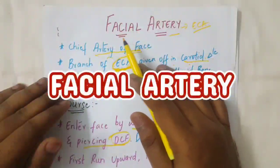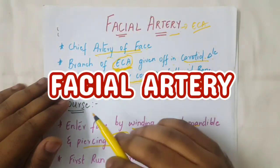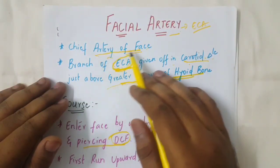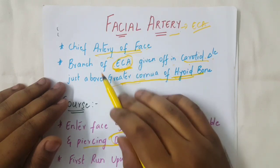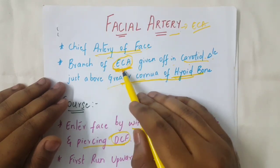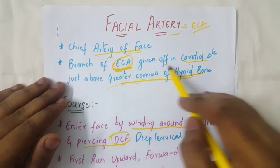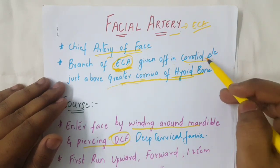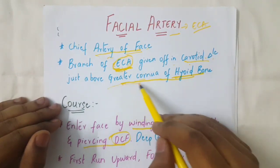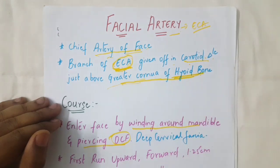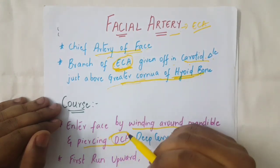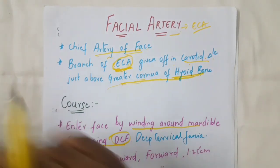Welcome to the channel. In this video we will be discussing the facial artery. It is a chief artery of the face, and it is a branch of the external carotid artery, given off in the carotid triangle just above the greater cornu of the hyoid bone. Now let's see the 3D anatomy.